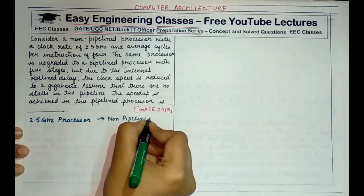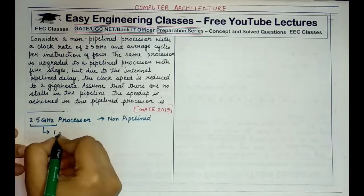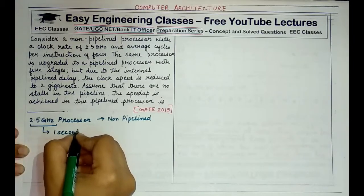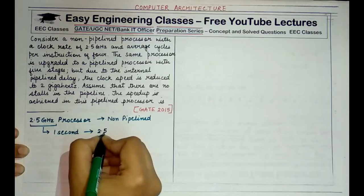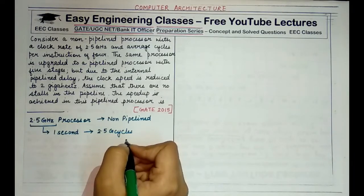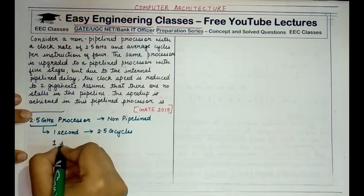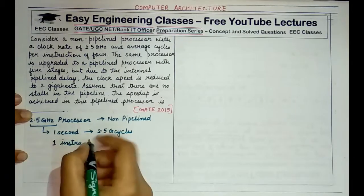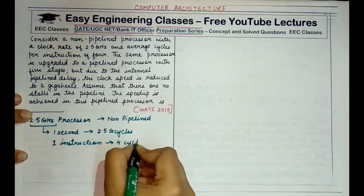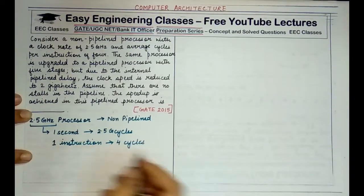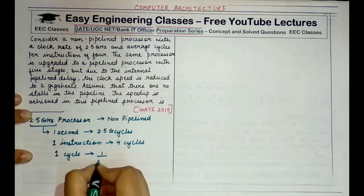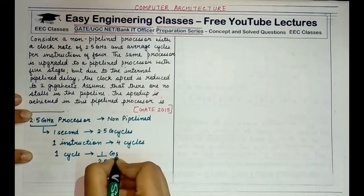This specification means that in one second 2.5 GHz cycles are completed. So in one second 2.5 GHz cycles. Now since it is given that an instruction takes 4 cycles, one instruction takes 4 cycles to complete. It takes 4 cycles to complete and we know that 2.5 GHz cycles are completed in one second. So one cycle is completed in 1 by 2.5 GHz. That is simple unitary method.